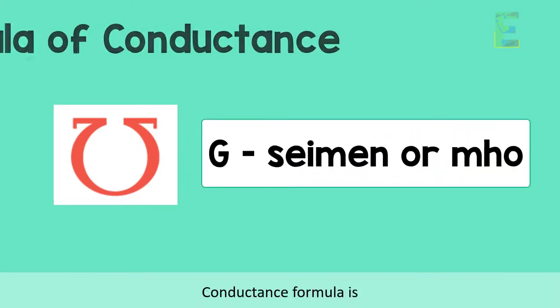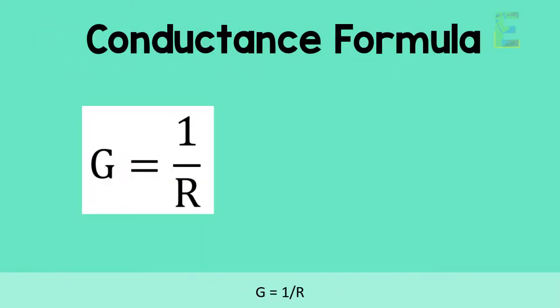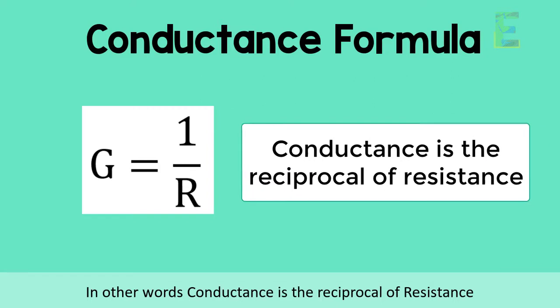Conductance formula is G equals 1 over R, where R is resistance. In other words, conductance is the reciprocal of resistance, which we have also mentioned in our definition.